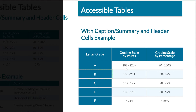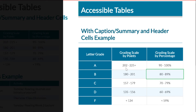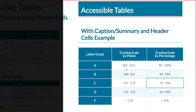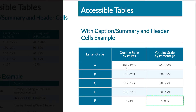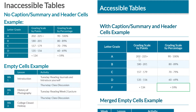Going down to the next row: B — grading scale by points 180 to 201. Again, it reads the column header then the points. Grading scale by percentage 89%. Then C — grading scale by points 157 to 179. So imagine if we had a big table with 20 columns and 20 rows and we were in the middle of it — this is a great example of an accessible table. I can hit alt+control+down arrow and navigate to F. Grading scale by points: less than 134. Grading scale by percentage: less than 59%. It tells me the percentage for grade F. So that is awesome.